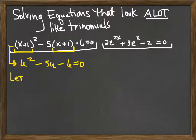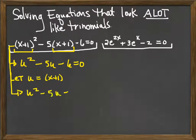I'm going to say let u be equal to x plus one and then this top equation actually becomes u squared minus 5u minus 6 equals zero.